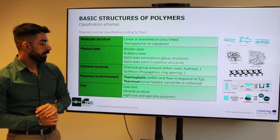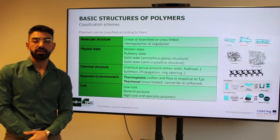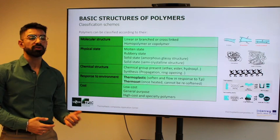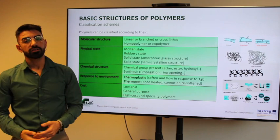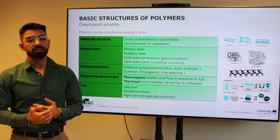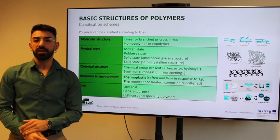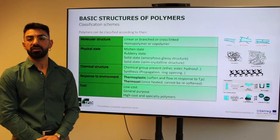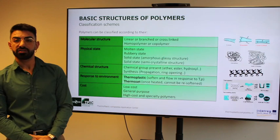As for the chemical structure, we can differentiate polymers by the chemical groups present — such as an ether group, hydroxide — or by their synthesis method, like chain propagation or ring opening. As for response to environment, the main classification of polymers is thermoplastics and thermosets. The main difference is that thermoplastic material can soften and flow in response to parameters like temperature or pressure, while thermosets, once cured, cannot be re-softened. This is mostly due to the cross-links, the bonds among the chains.